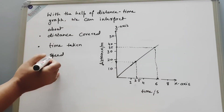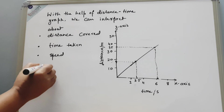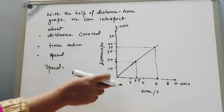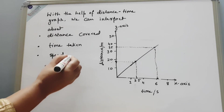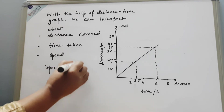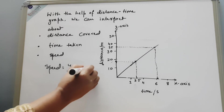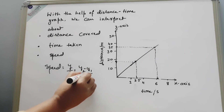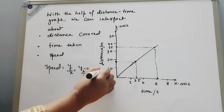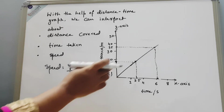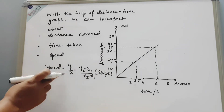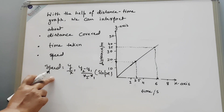Now we need to know about speed. We know the formula: speed equals distance divided by time, which is y divided by x — more precisely, y2 minus y1 divided by x2 minus x1. This is called the slope. The slope of a distance-time graph tells us about the speed of an object.